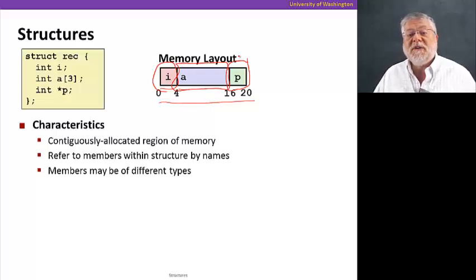And we can refer to the members of this structure by the names we've given them. But the members can be of different types. They don't have to be the same. In this case, these are either integers or pointers to integers, but those are very different data types.